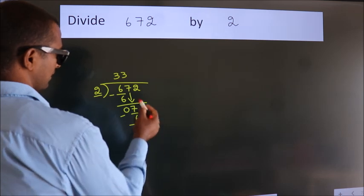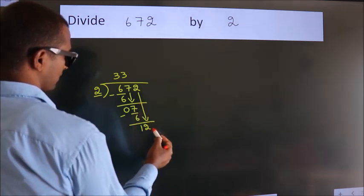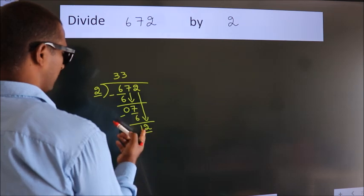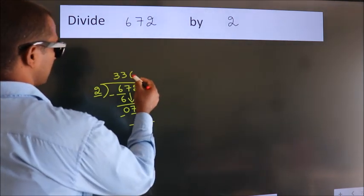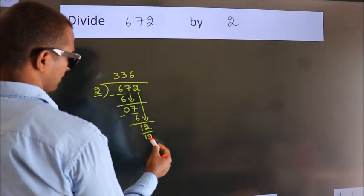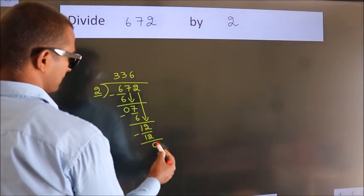After this, bring down the beside number. So 2 down. So 12. When do we get 12? In 2 table, 2 times 6 is 12. Now we subtract. We get 0.